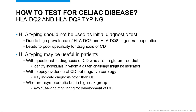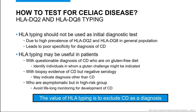In contrast, use of HLA typing in asymptomatic high-risk patients is more controversial. Some guidelines suggest it could be useful to exclude the diagnosis and thereby avoid lifelong monitoring for the disease. However, there is also recognition that the frequency of HLA-DQ2 and HLA-DQ8 is higher in certain risk groups, making a negative result less likely. In the end, there is consensus that the value of HLA typing lies with a negative result, which allows the clinician to exclude celiac disease as a diagnosis.